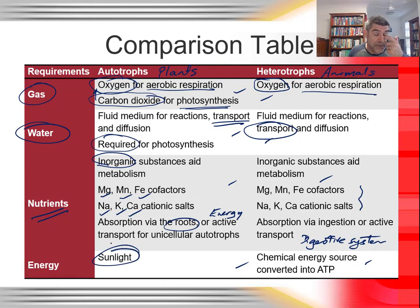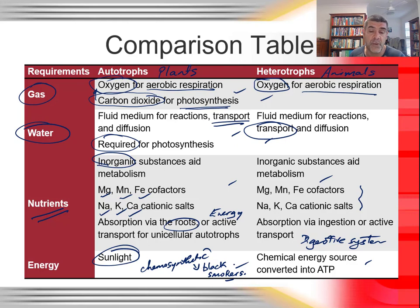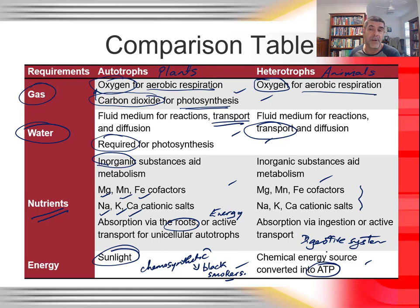We can also add energy to our comparison table. We've looked primarily at photosynthetic autotrophs, but there are also chemosynthetic autotrophs — for example, organisms found around black smokers in the deep ocean where there is no light, but where chemical reduction reactions generate sufficient energy for survival. So photosynthesis isn't the only way autotrophs produce their food, just the most common. For heterotrophs, the energy form is ATP, produced in the process of respiration — which brings us back to oxygen being a crucial input for aerobic respiration.